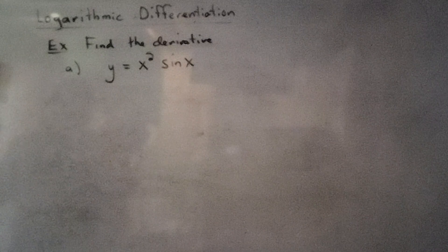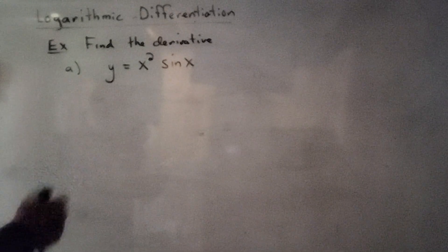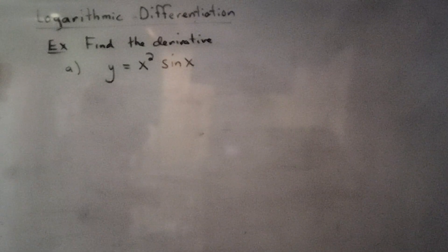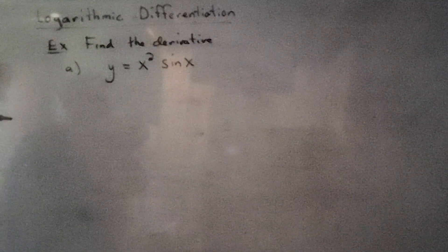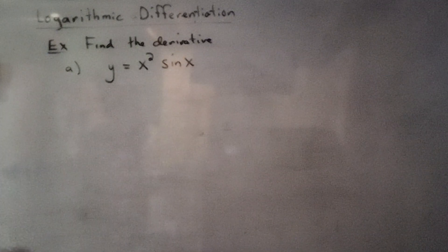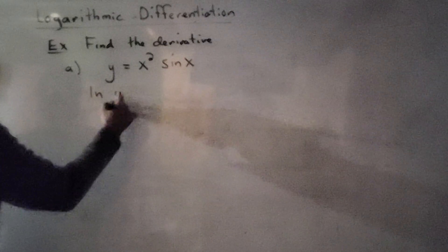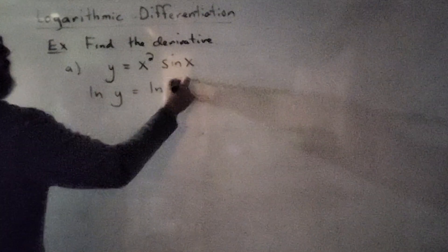I'm going to start with something that we know we can just use the product rule to find its derivative, but I want to show you how logarithmic differentiation actually works. What we do is we take the natural log — or any log base b — of both sides. We tend to like the natural log because it's less writing.